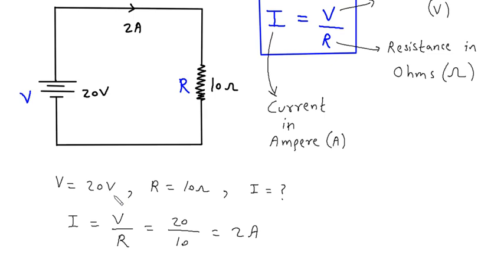V is equal to 20V, R is equal to 10 Ohm and you have to find this current I.